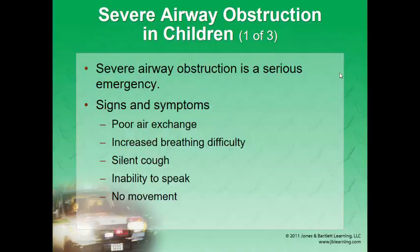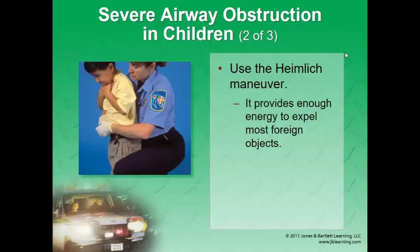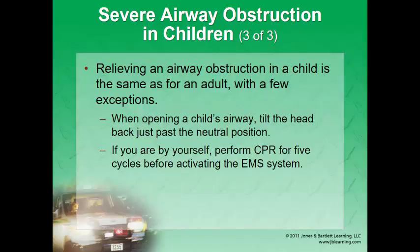Severe airway obstruction is very serious. If a child was well one minute and struggling to breathe the next, suspect a foreign body. Look for poor air exchange, weak or absent cough, inability to talk, and no chest movement. If there's a complete obstruction or poor air exchange, intervene. For children over age one, use abdominal thrusts: place one fist above the navel, the other hand on top, kneel to their level, and deliver up to five thrusts — if done correctly, the object usually comes out on the first or second thrust.